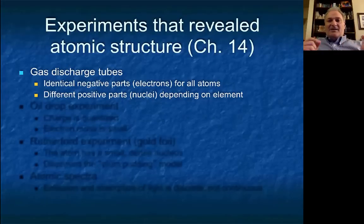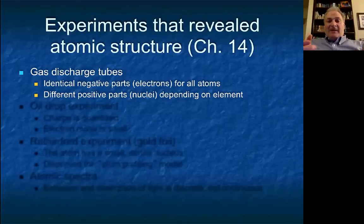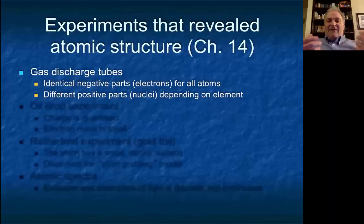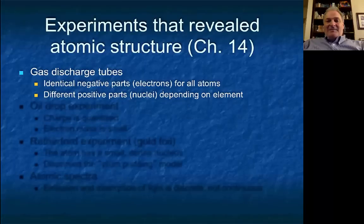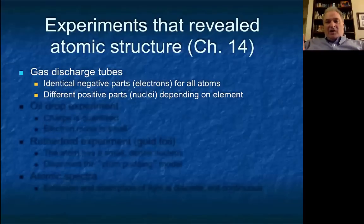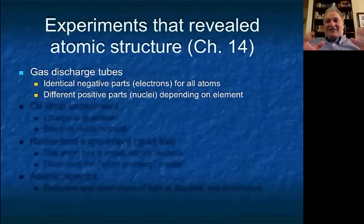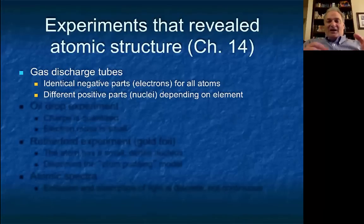Electrons are part of all atoms. The positive particles they observed were different — they depended on what kind of gas was used. The positive parts, which we now call positive ions or atomic nuclei, varied depending on the element. Thompson developed a model called the plum pudding model, or raisin bread model, where the positive part — which was more massive than the negative part — was like the bread, and the electrons were like little raisins spread throughout.